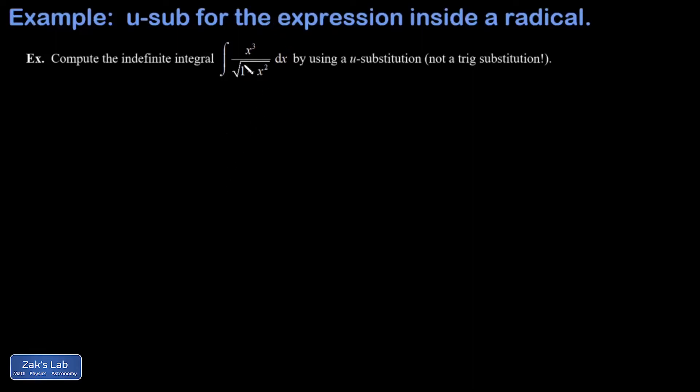In this example we're asked to compute an integral x cubed over square root 1 minus x squared by using a u-substitution, and in parentheses I said not a trig substitution. So when I see this integral I think the best approach is probably to use a trig substitution, but I wanted to illustrate that an ordinary u-substitution could work here.